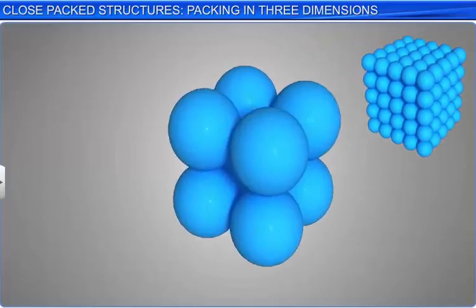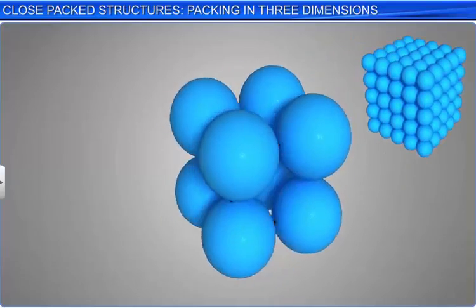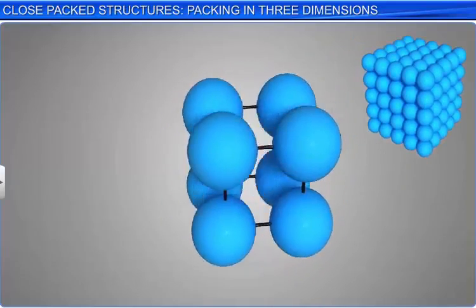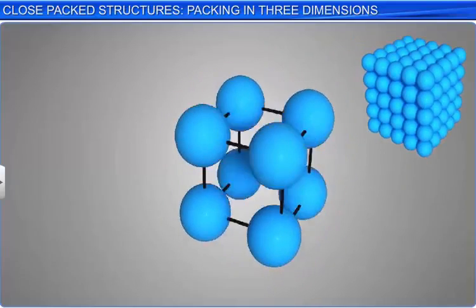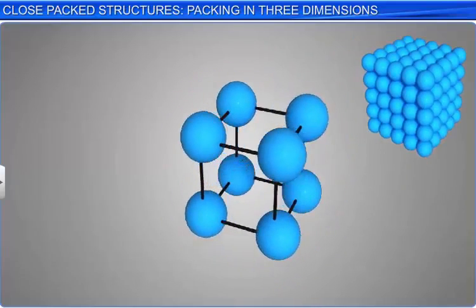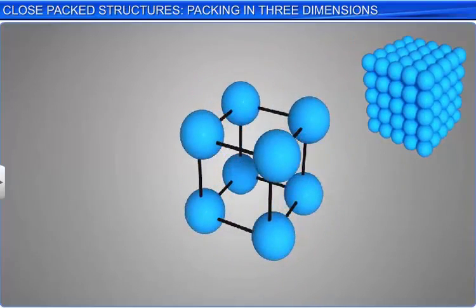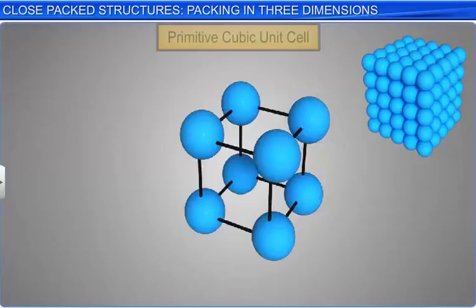If you look carefully, you will find that this arrangement has resulted in the formation of a simple cubic lattice. The unit cell of this lattice is a primitive cubic unit cell.